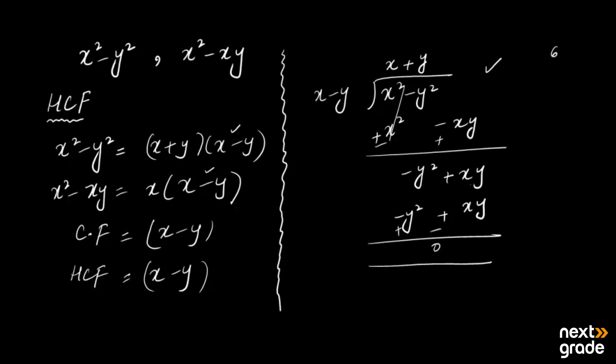Just like when you take the factor of 6 and 9, which is 3, checking 3 completely divides both 6 and 9 — that is the definition of a factor. Similarly, here the common factor x−y completely divides the first expression. Now let's divide x²−xy by x−y as well.